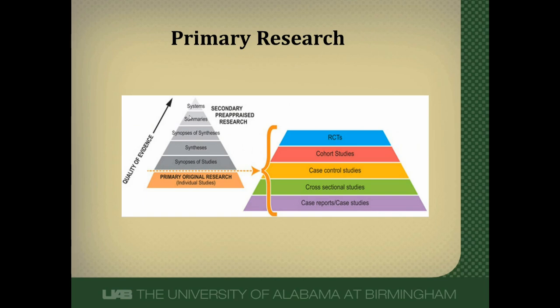The Haines 6S hierarchy is demonstrated here, and original research studies are at the very bottom of the Haines 6S hierarchy. These primary research studies are further broken down into another hierarchy based on the risk of bias. Randomized control trials have the least risk of bias, followed by cohort studies, followed by case control studies. So case control studies are near the bottom of the hierarchy because they are the most prone to bias, and these biases will be the focus of another video.